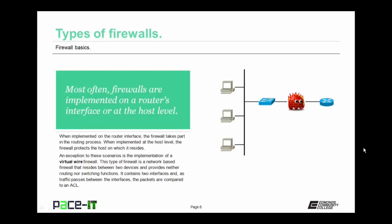Most often firewalls are implemented on a router's interface or at the host level. When implemented on the router interface, the firewall takes part in the routing process. When implemented at the host level, the firewall protects the host on which it resides. There is an exception — the virtual wire firewall. This type of firewall is a network-based firewall that resides between two devices, providing neither routing nor switching functions. It contains two interfaces, and as traffic passes between them, the packets are compared to an ACL.